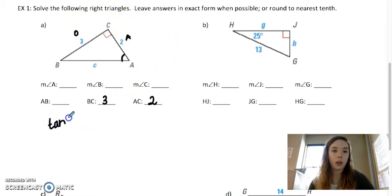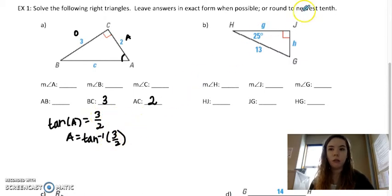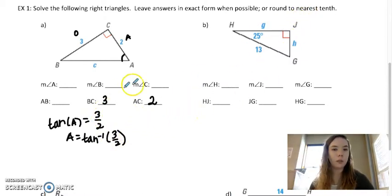So tangent of A is 3 over 2. So A is the inverse of that. So 56 round to the nearest tenth. So 56.3 is angle A.